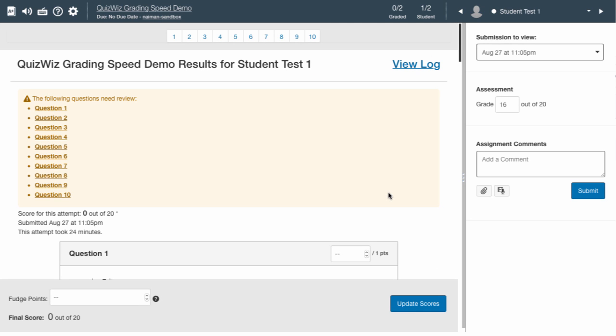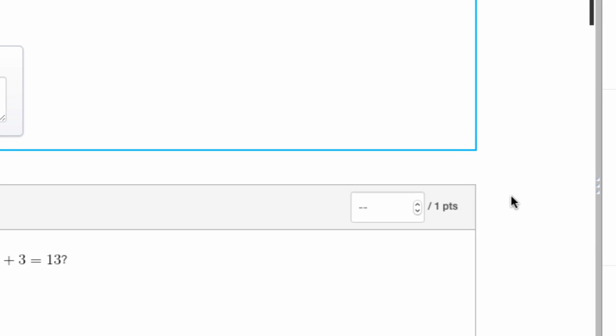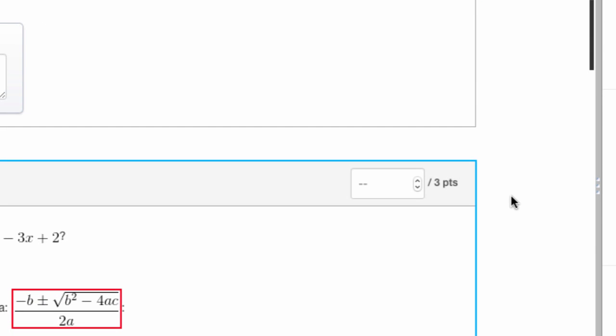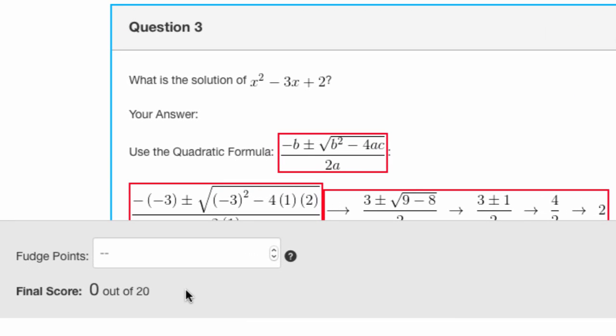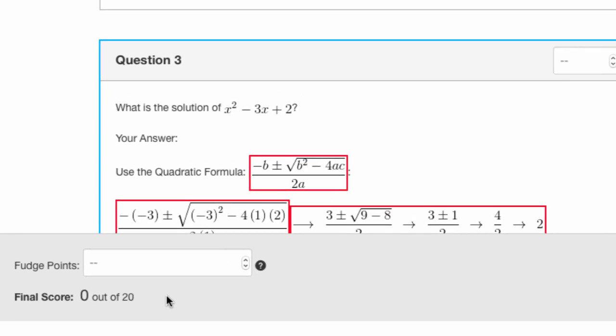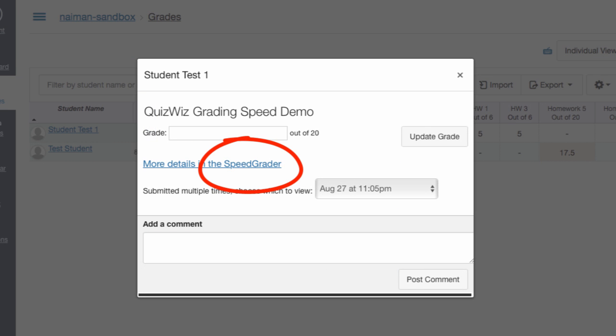Here is a quiz consisting of 10 essay questions of varying point values totaling 20 points. Each answer must be graded manually, which can be done using SpeedGrader.